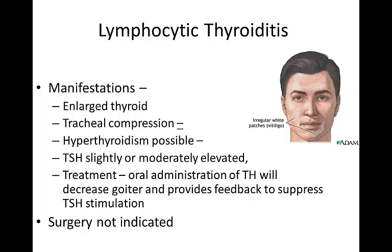You can have hyperthyroidism, which would be evident by nervousness, irritability, increased sweating, and hyperactivity. The TSH will be slightly or moderately elevated with progressive disease, and the T4 decreases, followed by a decrease in T3 and an increase in TSH.